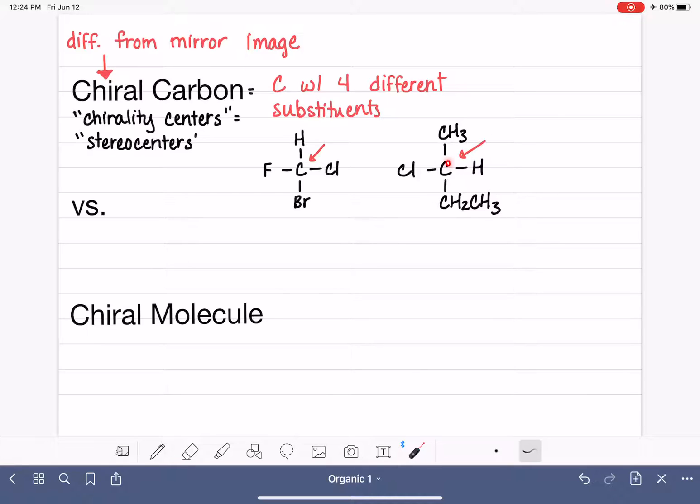A molecule will be chiral if it has at least one chiral carbon and the molecule is asymmetrical.